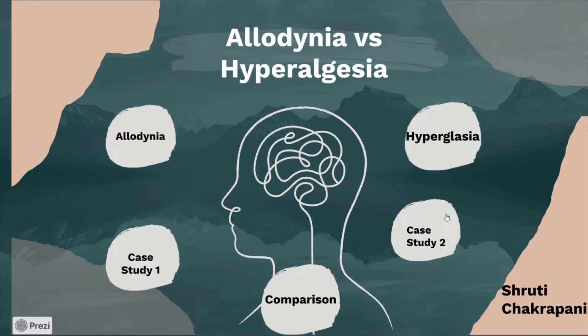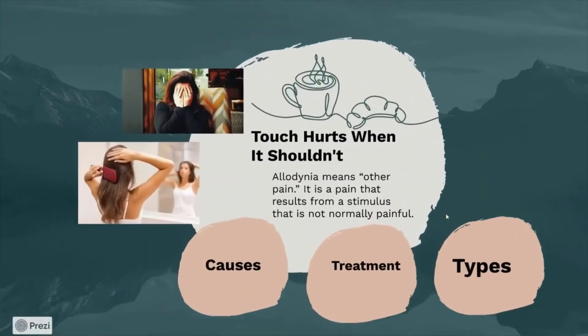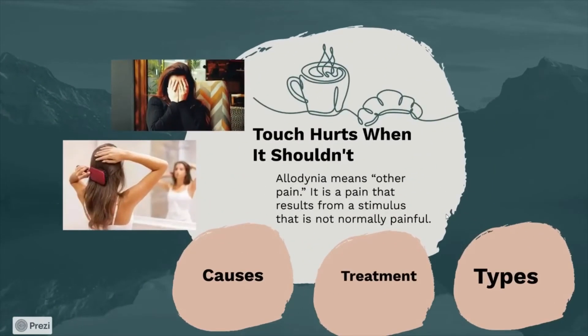Allodynia vs. Hyperalgesia. Allodynia is when touch hurts when it shouldn't. Allodynia means 'other pain' — it is a pain that results from a stimulus that is not normally painful.